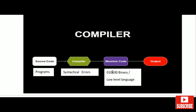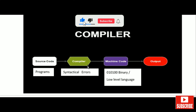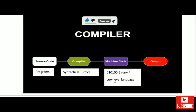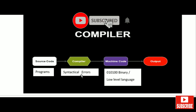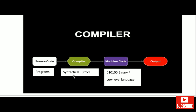The code is 010 — binary machine code. During compilation, the program's syntactical errors are displayed. The code is converted into machine code, and the corresponding program is executed, generating the output.